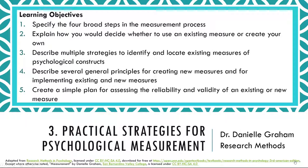So far in this chapter, we've considered several basic ideas about the nature of psychological constructs and their measurement. But now imagine that you're in the position of actually having to measure a psychological construct for a research project — how should you proceed? Broadly speaking, there are four steps in the measurement process: A. Conceptually defining the construct, B. Operationally defining the construct, C. Implementing the measure, and D. Evaluating the measure. In this section, we'll look at each of these steps in turn.